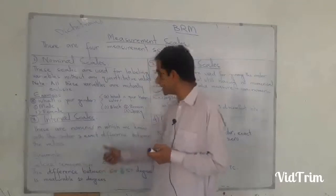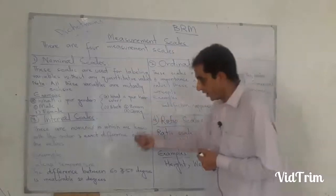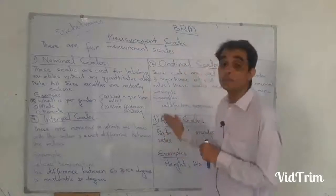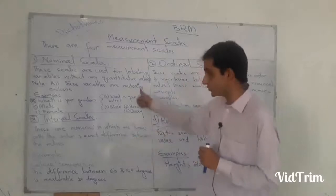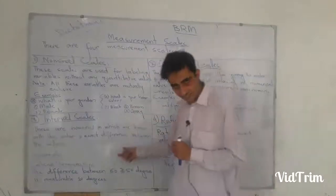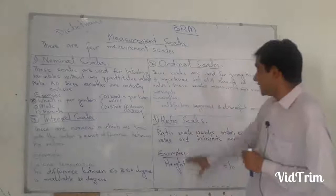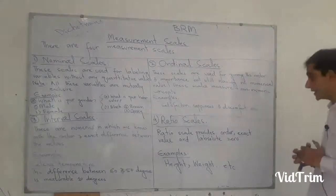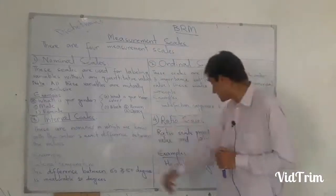Interval scale carries the characteristics of nominal scale — it has a label, such as 'Celsius' or 'temperature.' It carries the characteristics of ordinal scale — it has order: 10°C, 20°C, 50°C. But what distinguishes it from both is that it also carries a quantitative number. Those two previous scales had no quantitative number, but interval scale does.